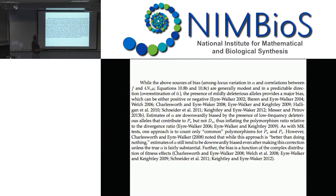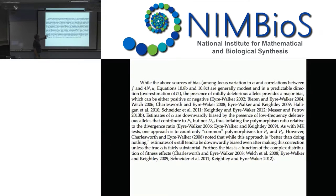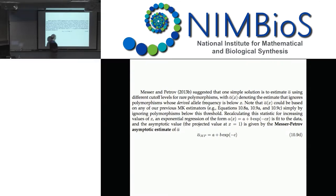One approach was to count only common polymorphisms for PA and PS, but what counts as 'common' and what threshold to use is unclear. Jane Charlesworth and Eyre-Walker noted this approach is 'better than doing nothing' but still tends to give downward-biased estimates unless the true alpha is fairly substantial. The way people try to get around these issues is to use likelihood-based models.